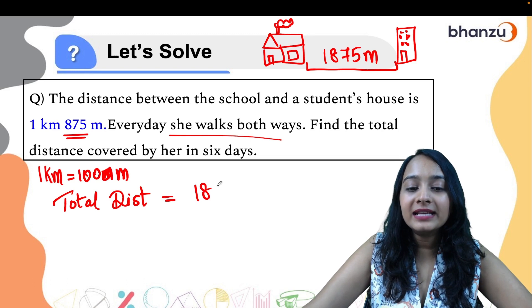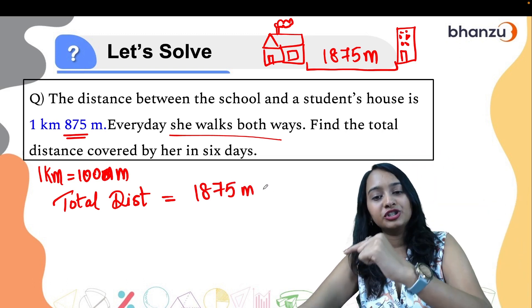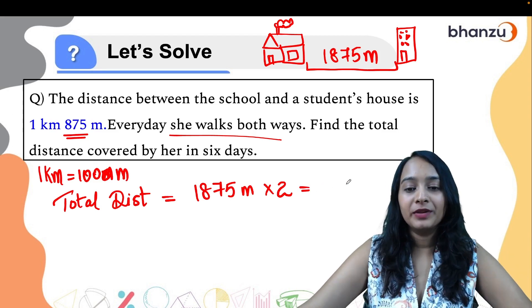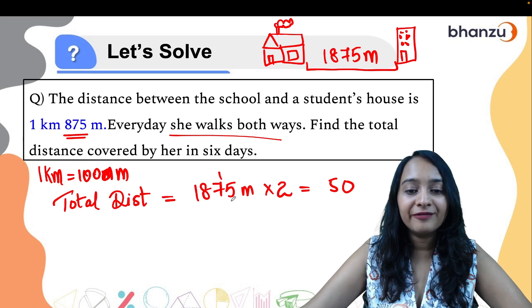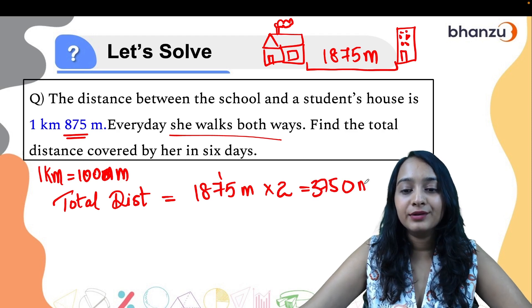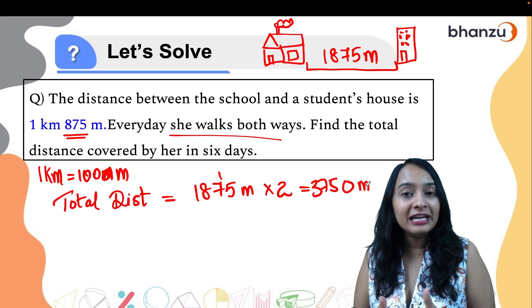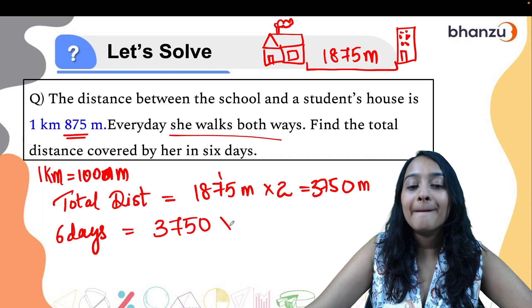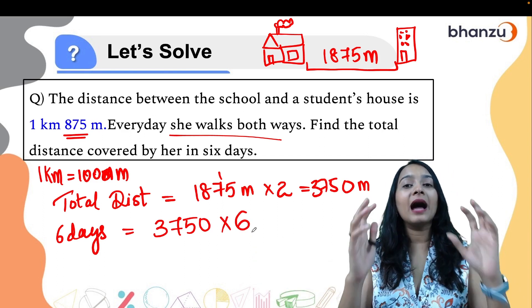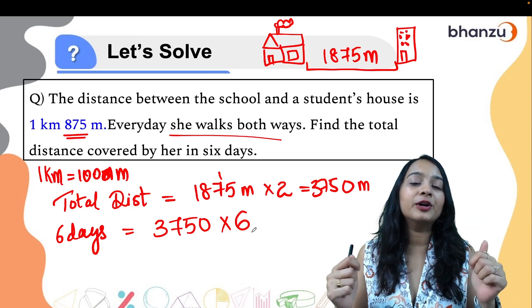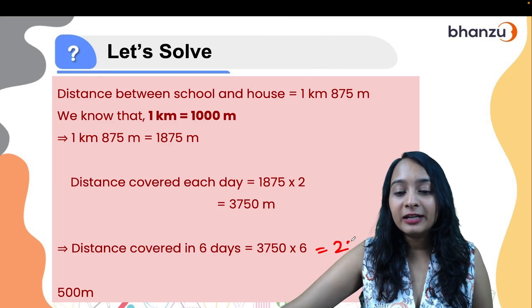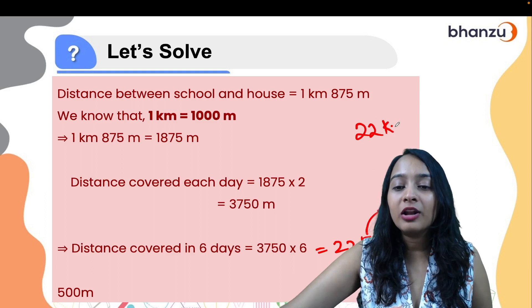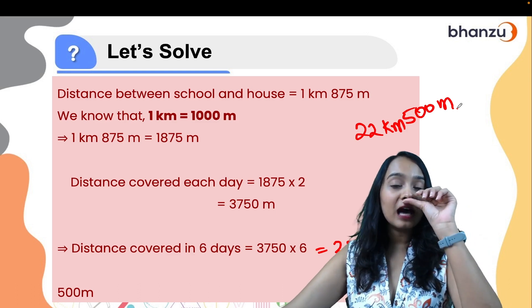Since she walks both ways — from home to school and back — we multiply 1875 by 2, giving 3750 meters per day. In six days she travels 3750 multiplied by 6, which equals 22,500 meters. This can be written as 22 kilometers and 500 meters — that's how far she travels in six days.